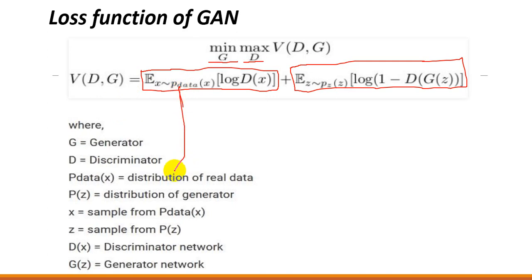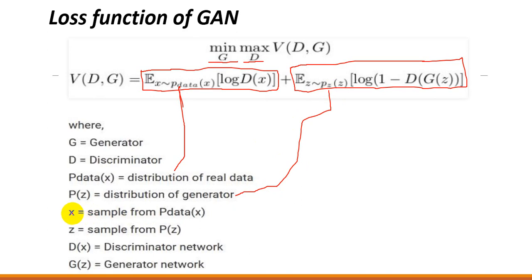When you give the real data to your discriminator, what is the probability or what is the distribution? Similarly, we have fake data, where P of Z represents the distribution of the generator, while X represents the sample from P_data of X — that is the sample part. In P of Z, Z is the sample part. D of X is the discriminator of the network, while G of Z represents the generator of the network.